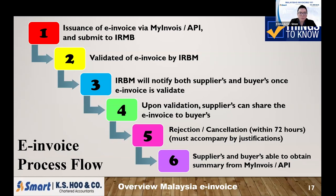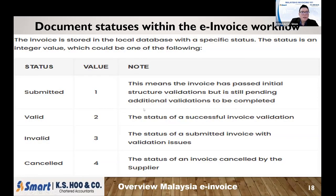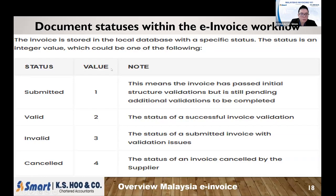To know the status of a submitted e-invoice, LHDN provides a guide with status codes. Status 1 means submitted but still pending validation. Status 2 means valid — the invoice was successfully validated. Status 3 means invalid — there was an issue and LHDN was unable to validate it. Status 4 means cancelled — the invoice has been cancelled by the supplier. You can reference these codes when checking your MyInvoice portal.